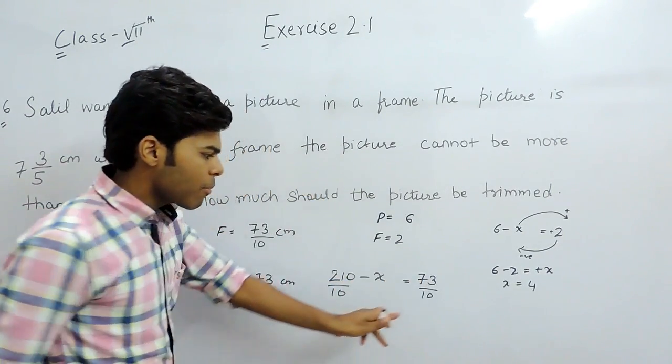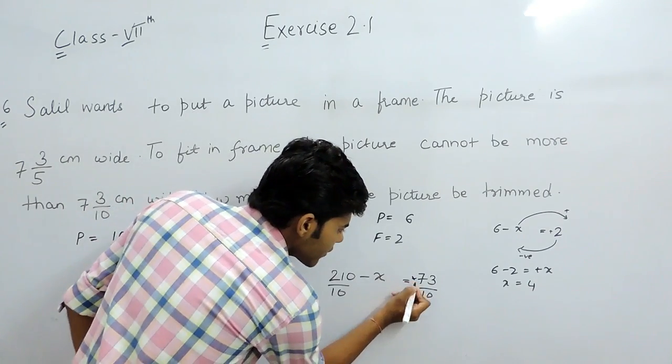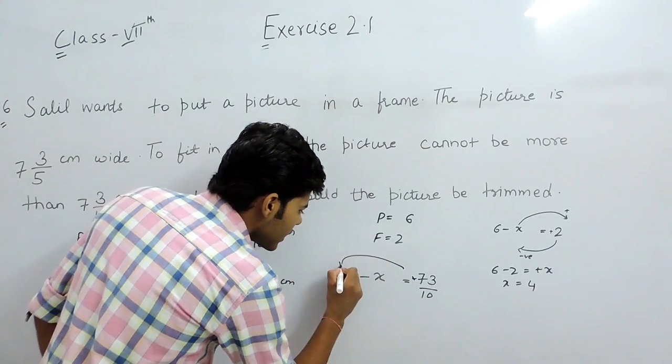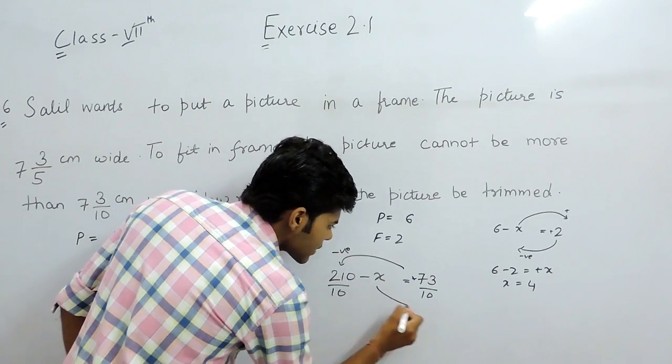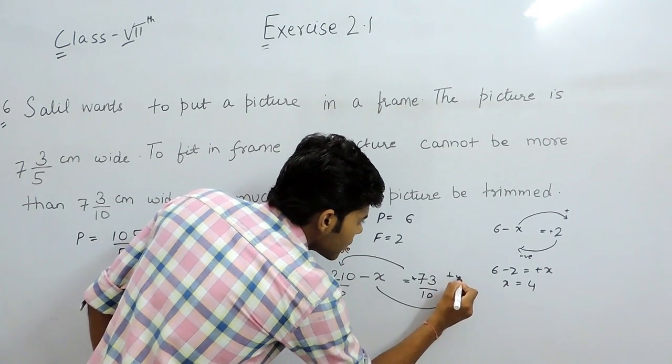Now we will shift this x to this side, it will become positive and this positive term will shift on the left hand side, it will become negative and when we shift it will become positive.